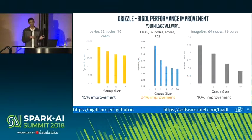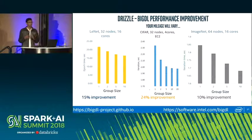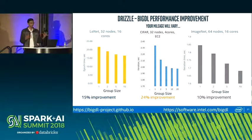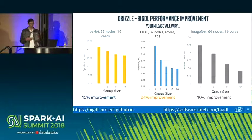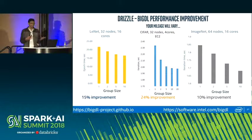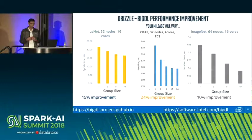Applying this across a range of models: for LeNet running on 32 nodes there was a 15% scheduling overhead that Drizzle with group size 10 nearly eliminated. There were even larger wins for CIFAR-10 running on 32 EC2 nodes. The benefits depend on model size and scale of computation, and we also ran this on an ImageNet dataset.